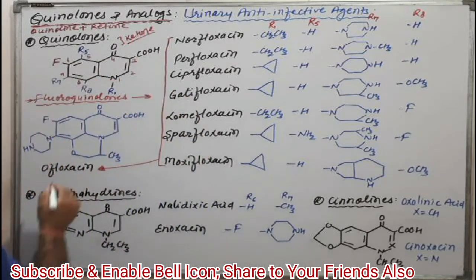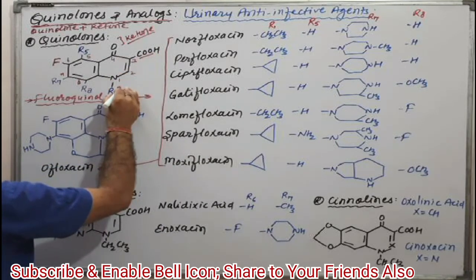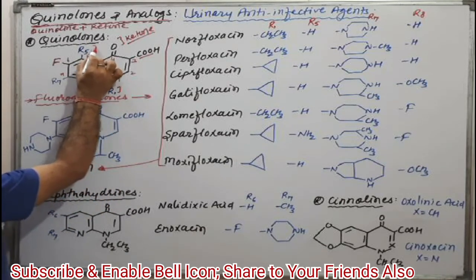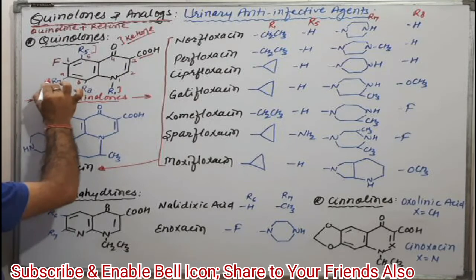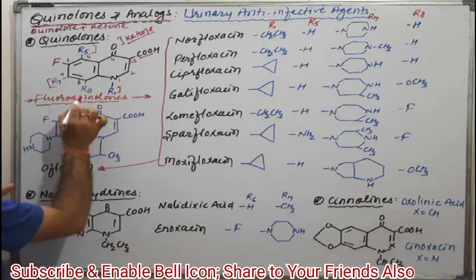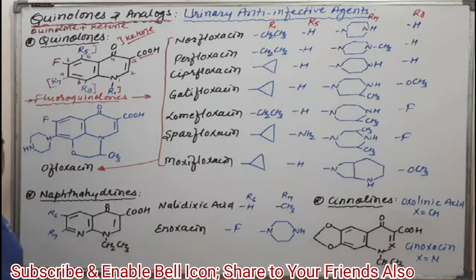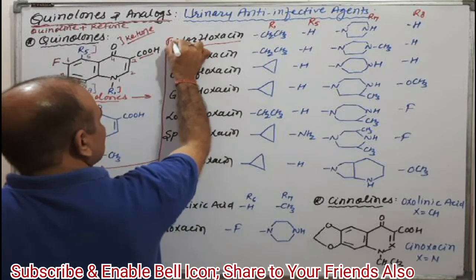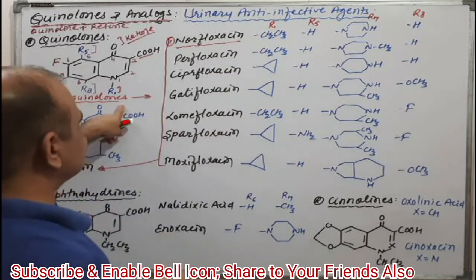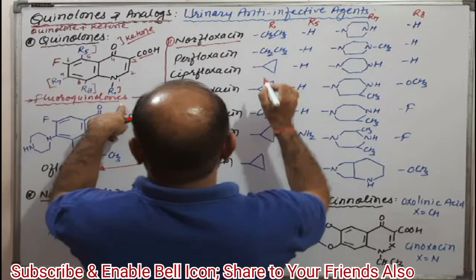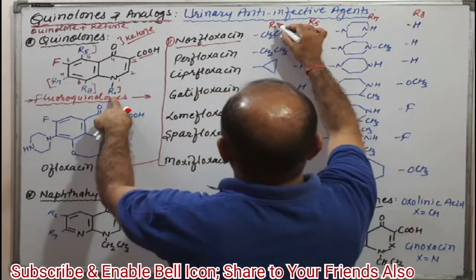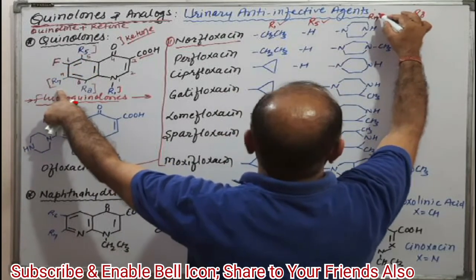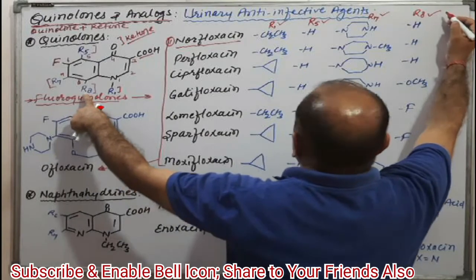Try to understand: there is a carboxyl group, and R1 is the substituent at position 1. Similarly, R5 is the substituent at the 5th position, R7 is the substituent at the 7th position, and R8 is the substituent at the 8th position. For our first drug, norfloxacin: R1 is this one, R5 is this one, R7 is this one, and R8 is this one.